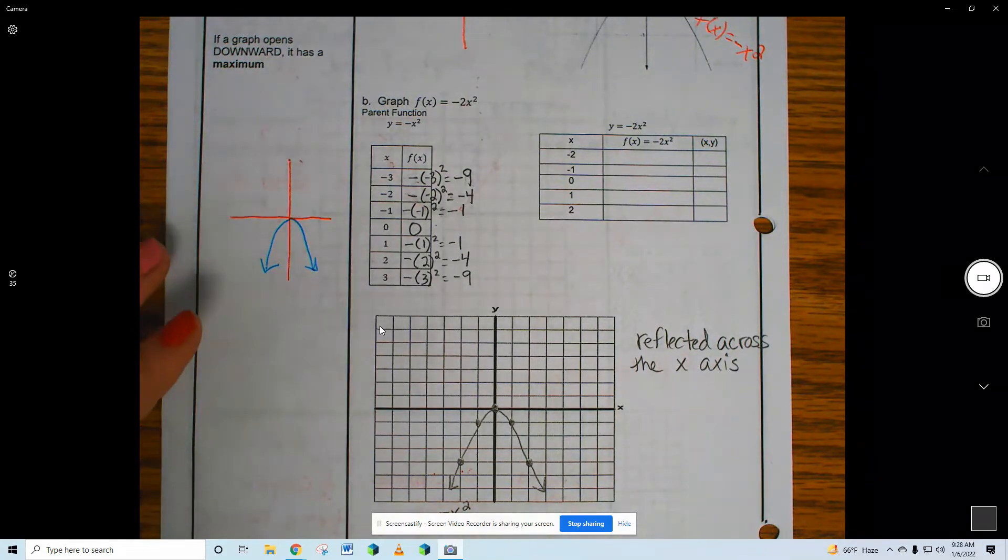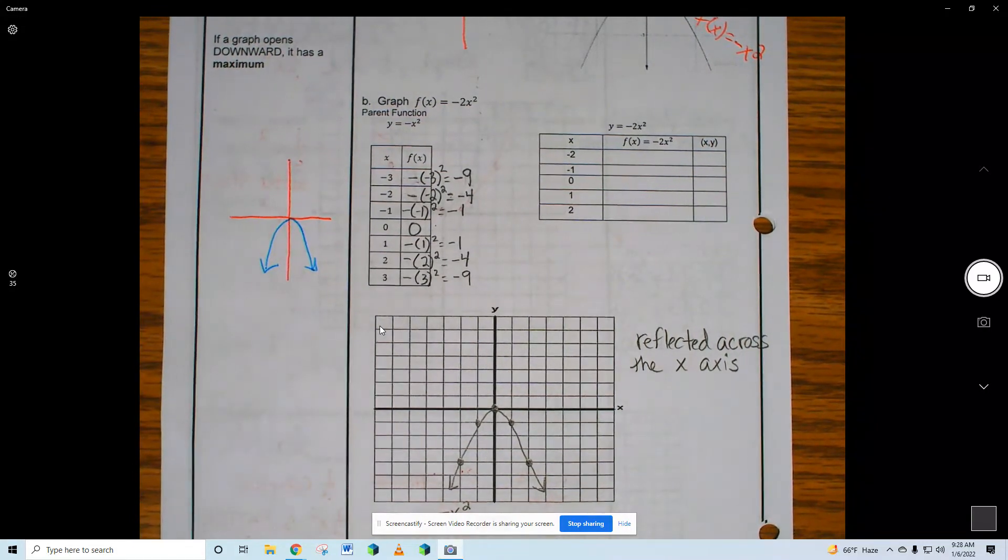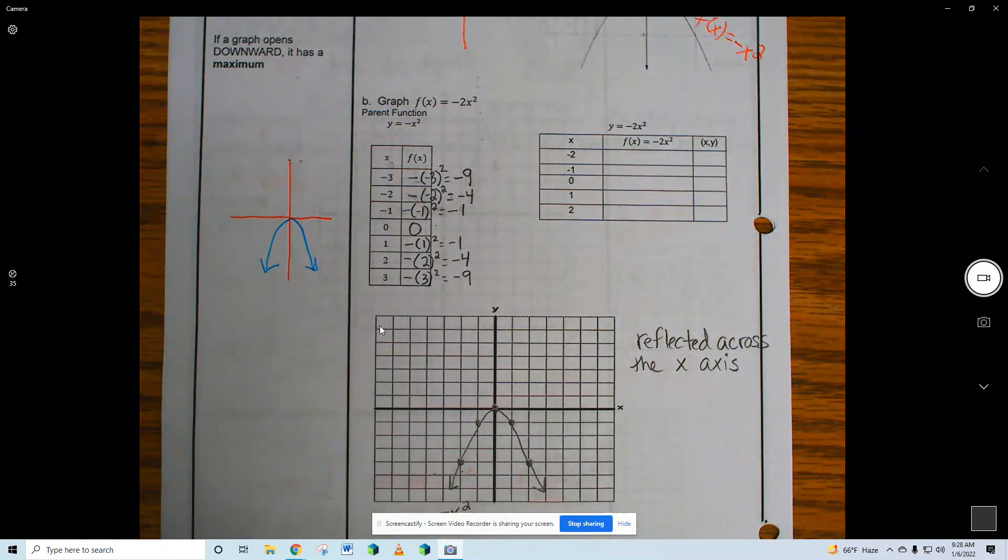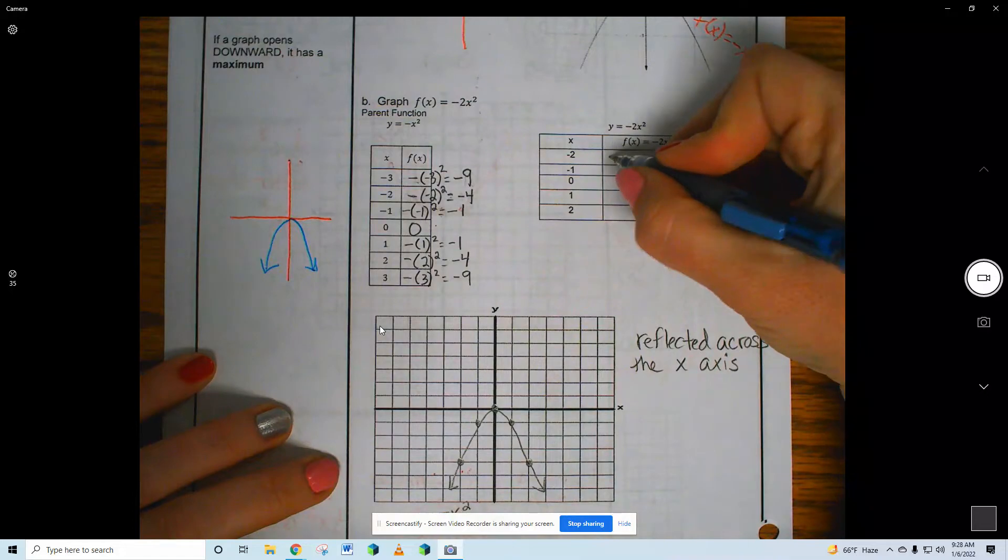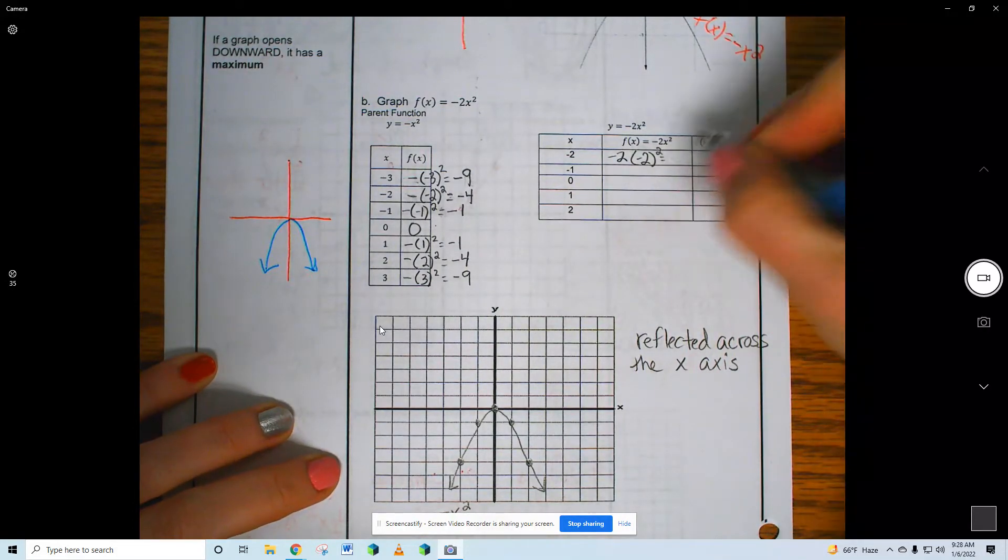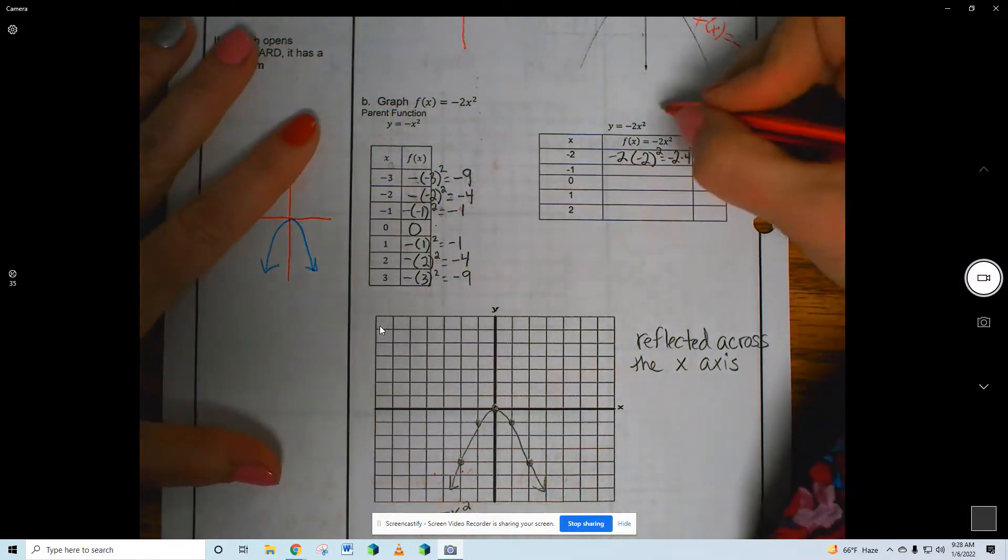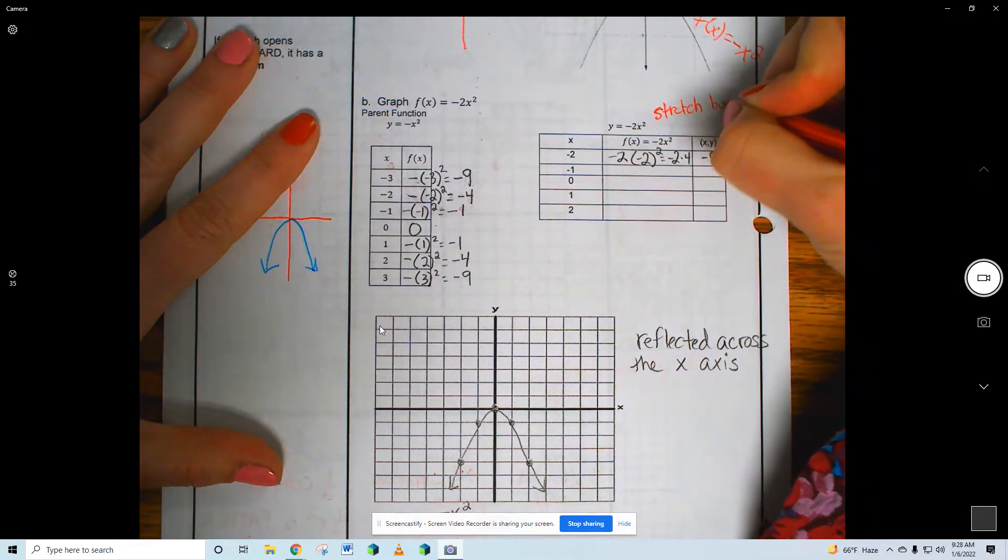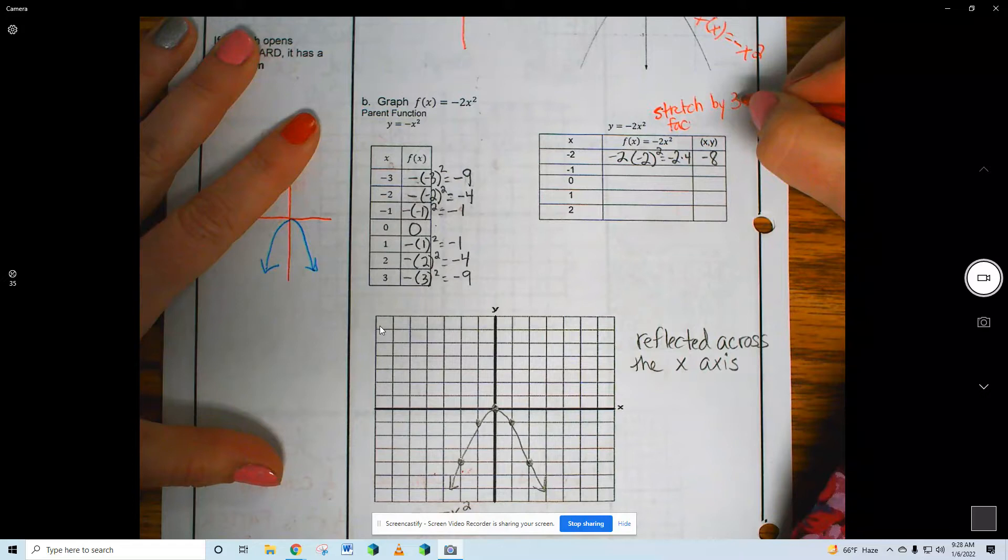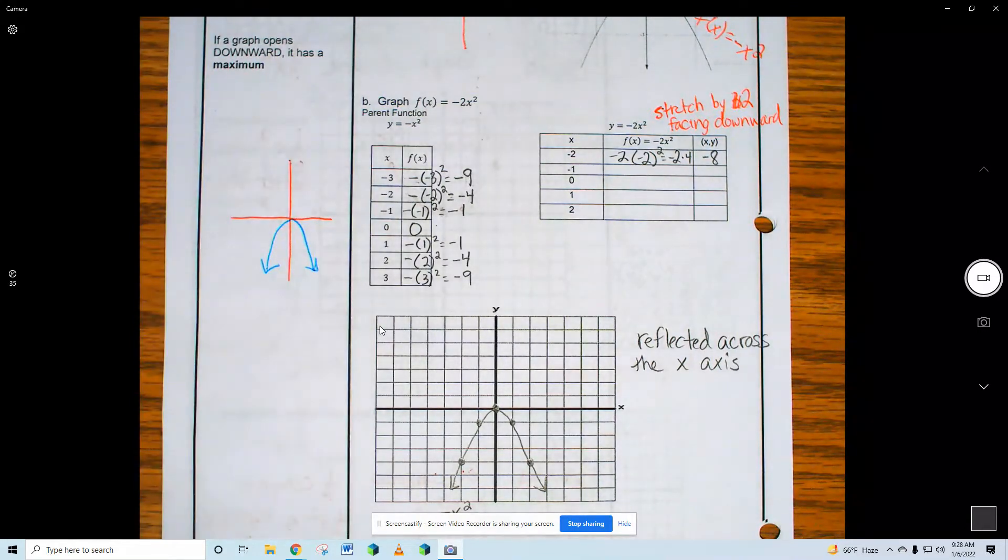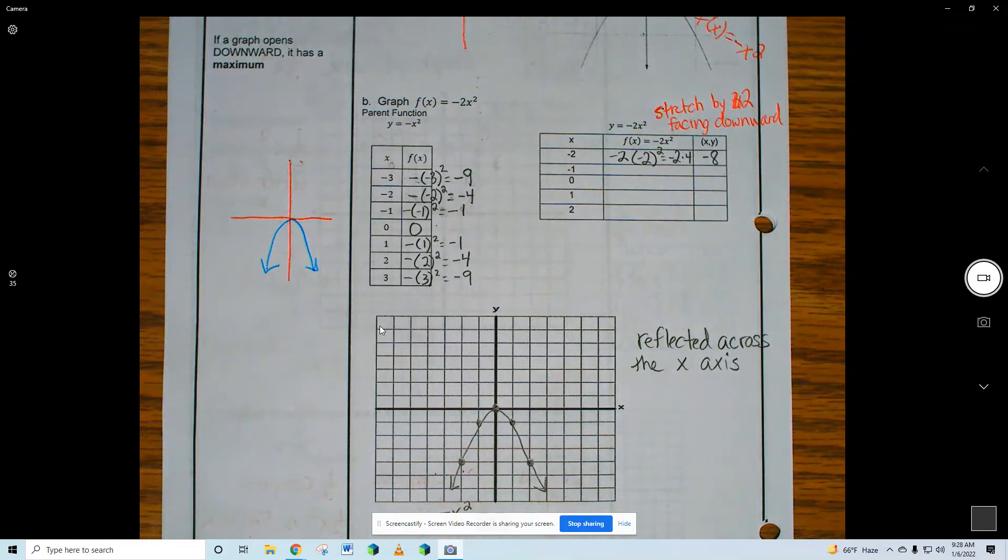Okay. Now let's do the negative 2X squared. Negative 2. Negative 2 times negative 2 squared. Negative 2 times 4. Negative 8. This is going to be stretched by 3, but facing downward. Because it's negative. The negative sign means it faces downward. The 2 means it's stretched.